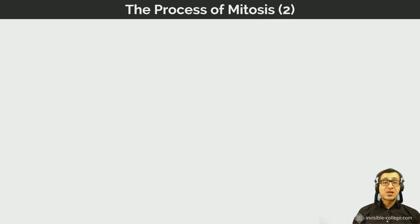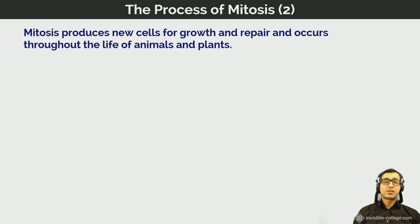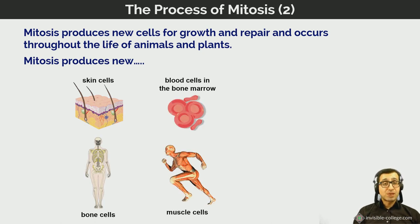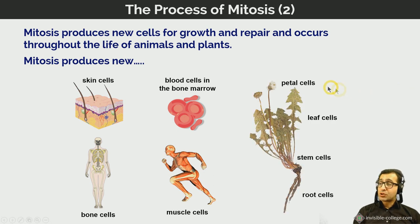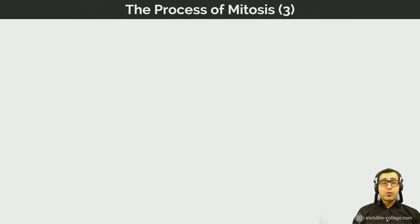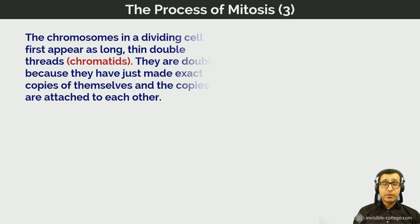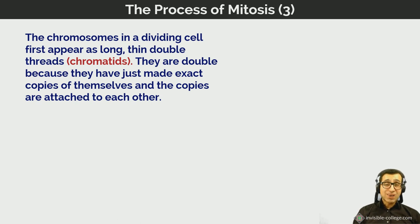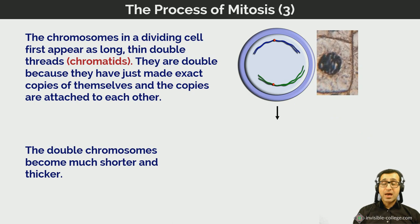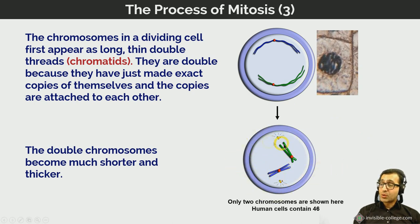Mitosis produces new cells for growth and repair and occurs throughout the life of the organism. It can produce new skin cells, bone cells, blood cells in the bone marrow, and muscle cells. In plants, mitosis produces root cells, stem cells, leaf cells, and petal cells. As a cell enters division, the chromosomes first appear as long thin double threads called chromatids — double because they've just made an exact copy, with copies attached at the centromere.